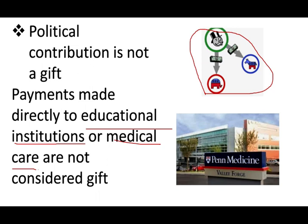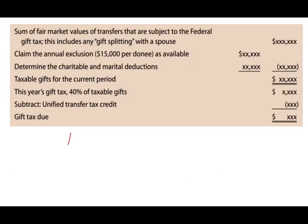Let's take a look at the gift formula. First, we start with the sum of fair value of transfers that are subject to the federal gift tax — include all the gifts you provided. Then we deduct the annual exclusion, which is $15,000 per person. We include the $15,000 first, then we deduct it out. Then we deduct any charitable contribution and marital deduction — husband and wife can give gifts to each other as much as possible, so we deduct those. Then we have the taxable gift for the current year.